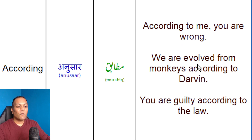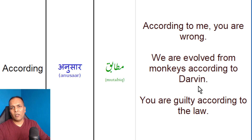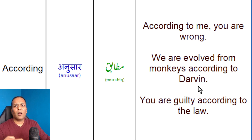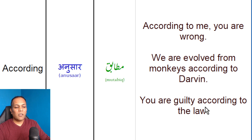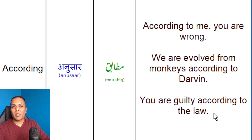We are evolved from monkeys according to Darwin. Darwin keh mutabik, hum bandroon seh banay hain. You are guilty according to the law. Kanoon keh mutabik, aap mujrim hain.